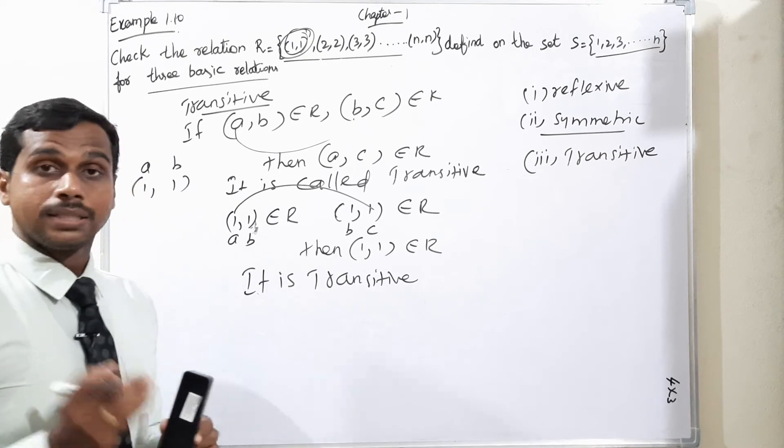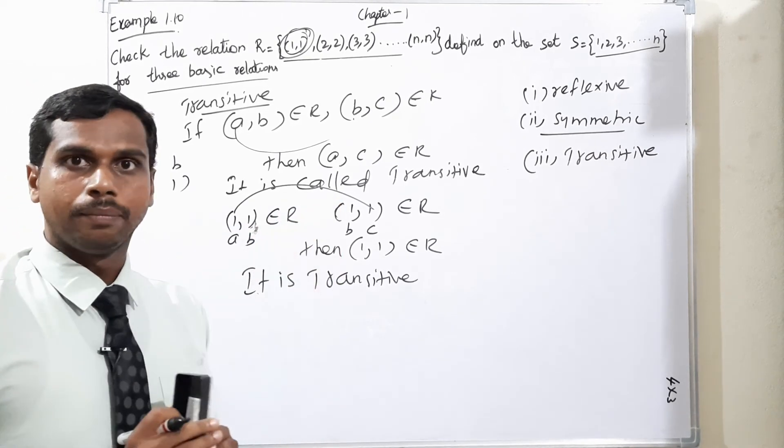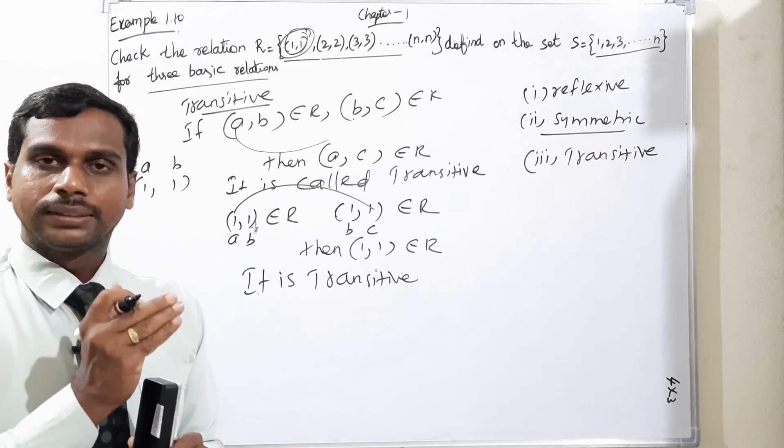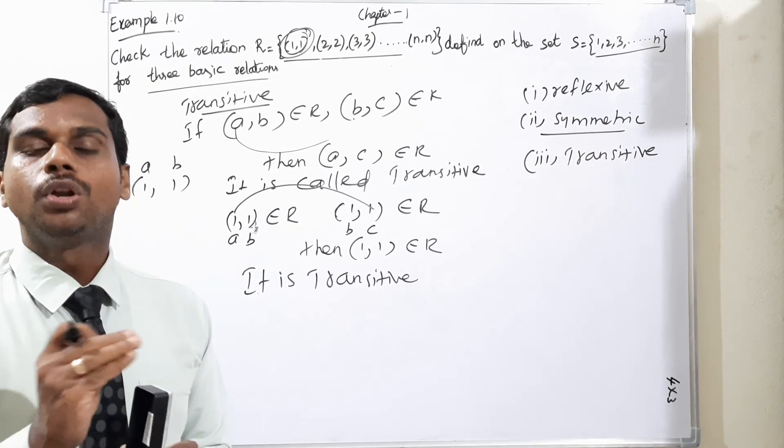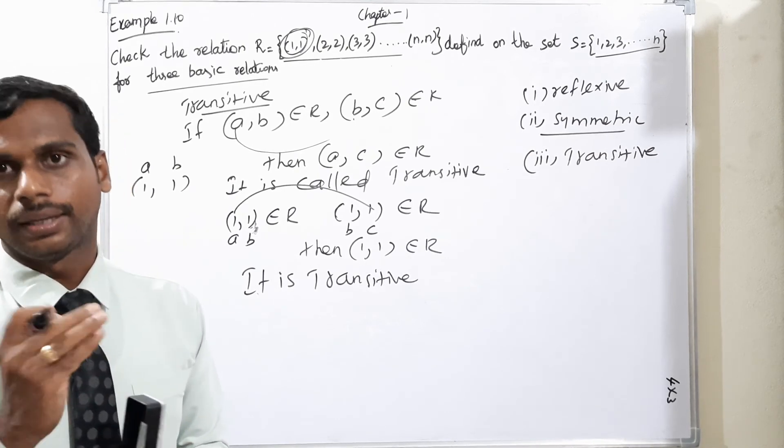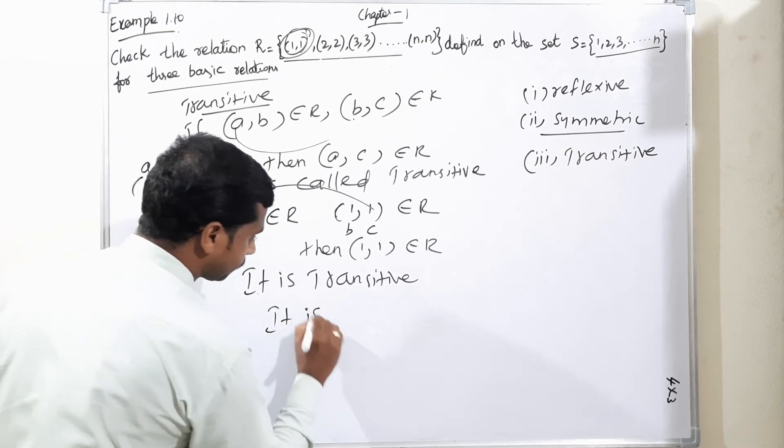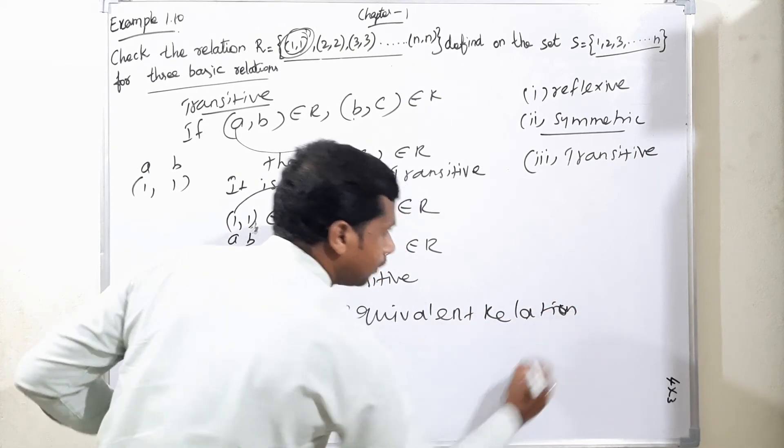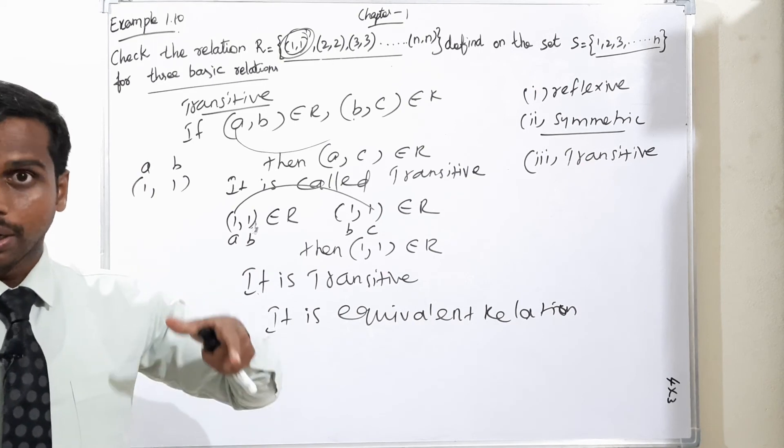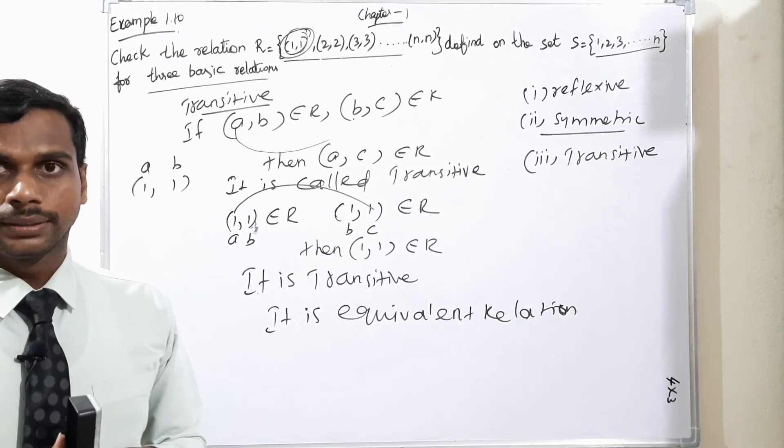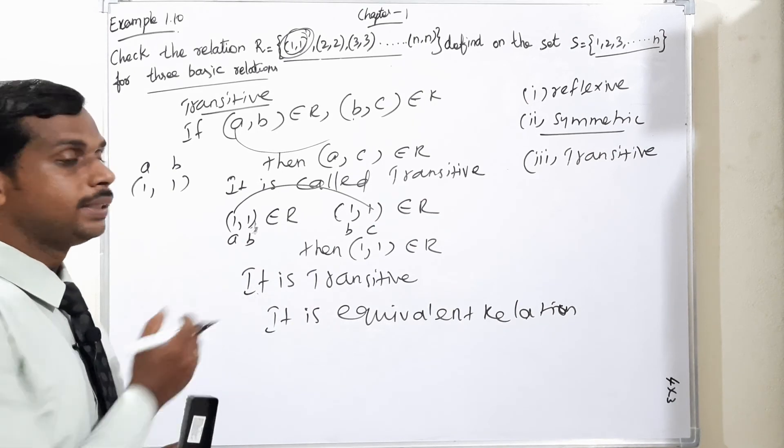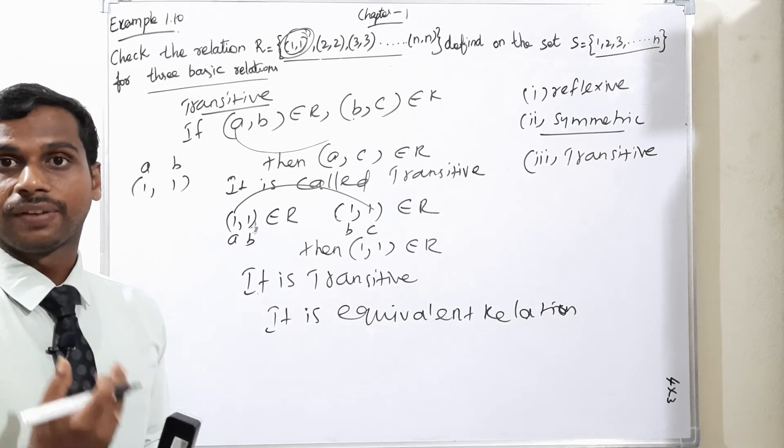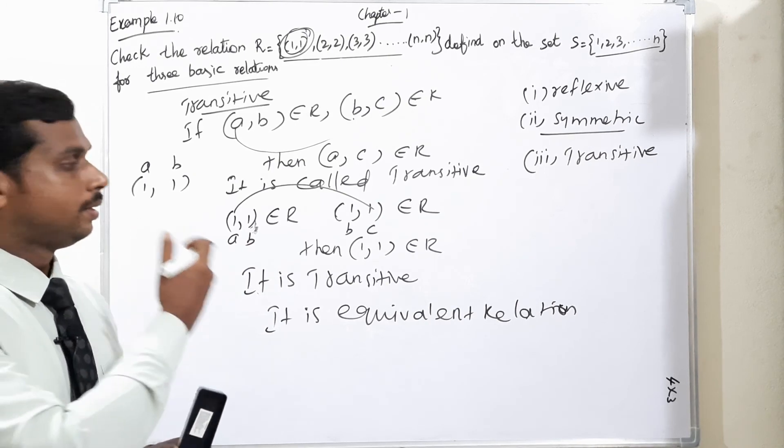This is third answer. We have proved reflexive, symmetric, and transitive. One more question is possible: is it an equivalence relation? If you prove symmetric, reflexive, and transitive, we can say this is an equivalence relation.